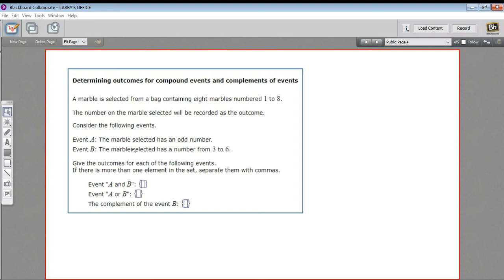In this problem, we're being asked to write out the outcomes for some compound events, so event A and B, event A or B, and then also write out the outcome for a complement of an event. A complement just means the opposite, so the complement of event B is not B or everything other than B.